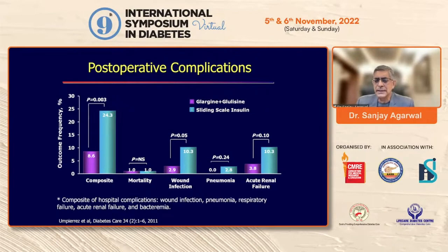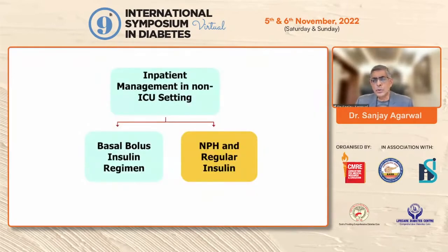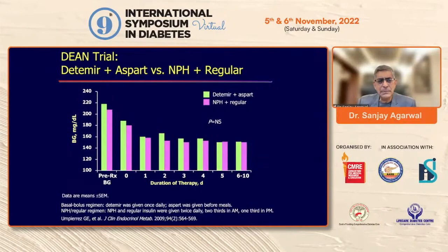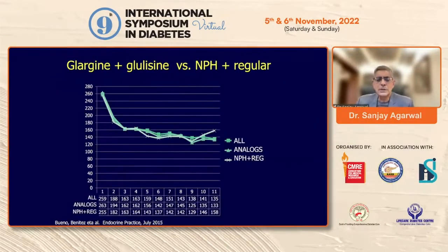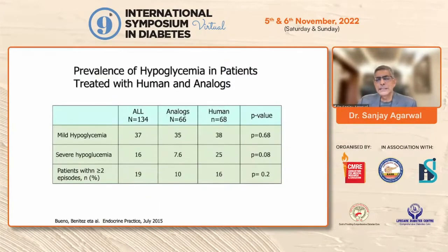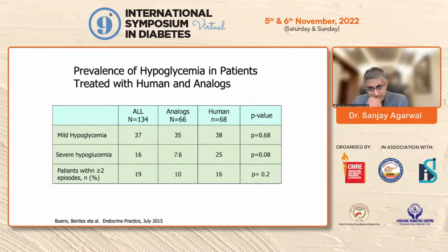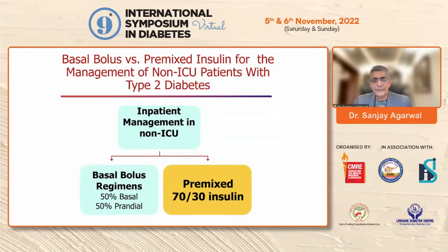Do all patients require insulin analogues? Comparing basal-bolus with analogues versus NPH and regular insulin, glycemic control was very similar between the two groups, but hypoglycemia rates were lower with analogues compared to human insulins. This is a clear advantage of analogues. For patients at higher risk for hypoglycemia, very sick patients, or those with altered mentation, analogue insulins are favored because of lower hypoglycemia risk.